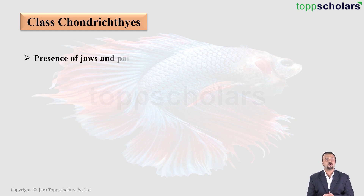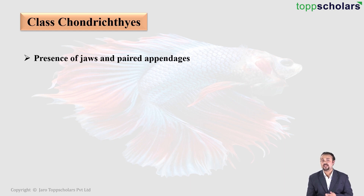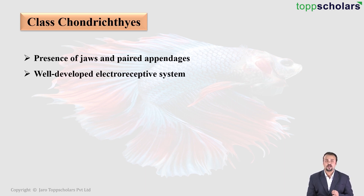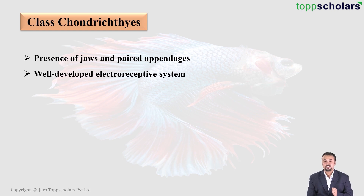Let us see a few characters of cartilaginous fish. They have jaws and paired appendages — and since these are fishes, the appendages will be nothing but fins. They have a very well-developed electro-receptive system. The best example are sharks — it may surprise you that sharks are very sensitive to the slightest changes in electricity in the water.